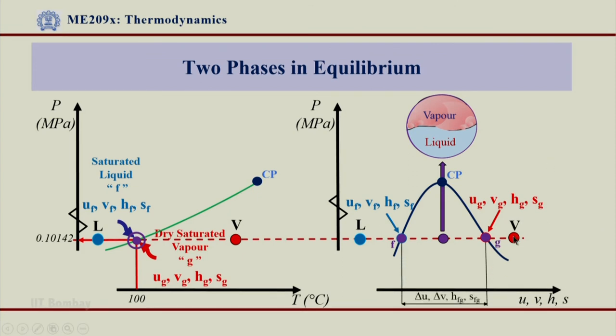What is important to note also is the difference between ug and uf, vg and vf, hg and hf, and sg and sf. The difference between hg and hf is nothing but hfg, which is given over here. These two values, the hfg and sfg, are given in the steam table directly.